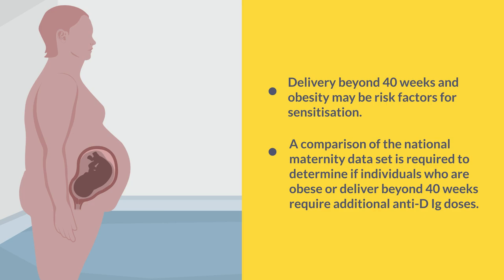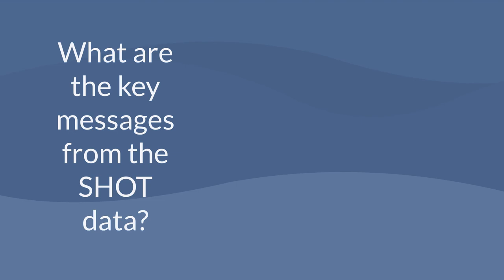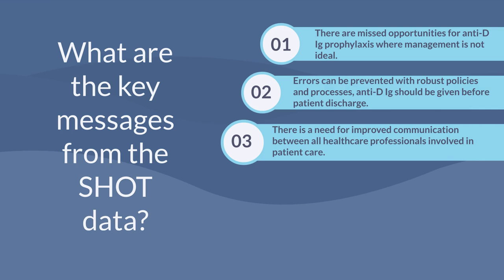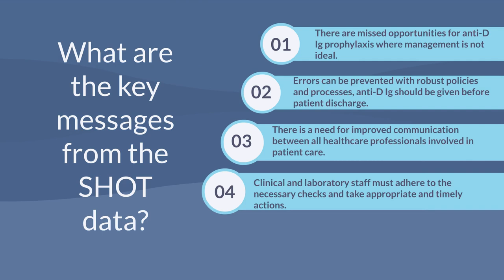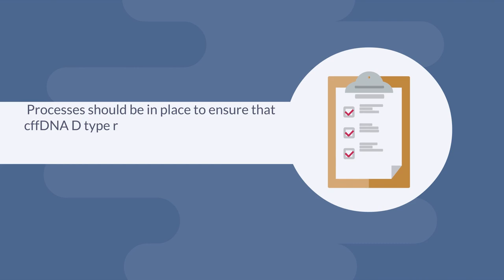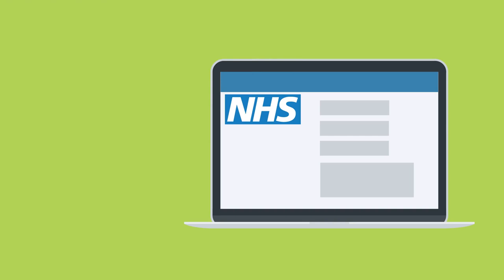The key messages from the SHOT data are: there are missed opportunities for anti-D Ig prophylaxis where management is not ideal; errors can be prevented with robust policies and processes; anti-D Ig should be given before patient discharge; there is a need for improved communication between all healthcare professionals involved in patient care; clinical and laboratory staff must adhere to necessary checks and take appropriate and timely actions; pregnant individuals should be educated about potentially sensitising events and the importance of reporting these within 72 hours of occurrence; processes should be in place to ensure that CFF DNA results are reviewed prior to ordering or administration of anti-D Ig or RAADP; and as more hospitals introduce electronic patient record systems, these should be configured to provide clinical decision support for appropriate use of anti-D Ig.